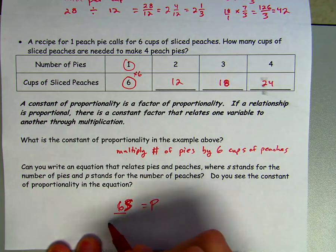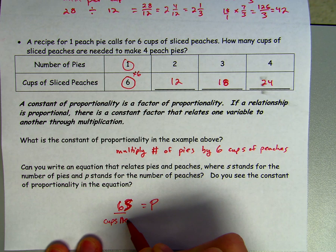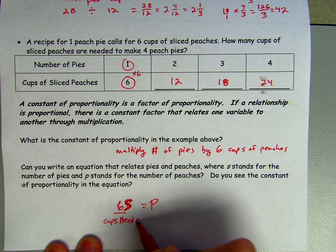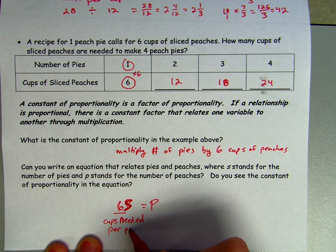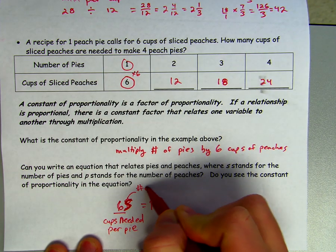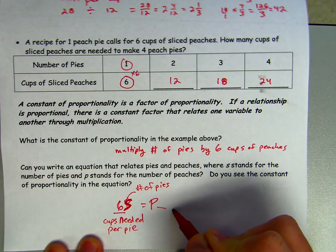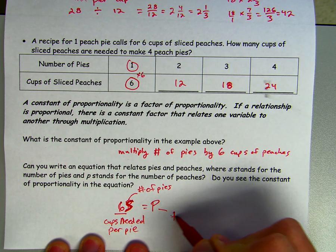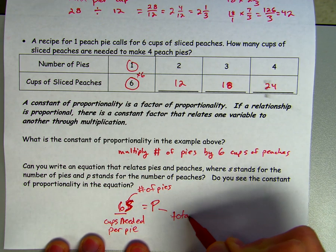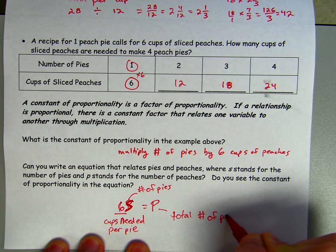So 6 is the cups needed per pie, S is the number of pies, and P is the total number of peaches.